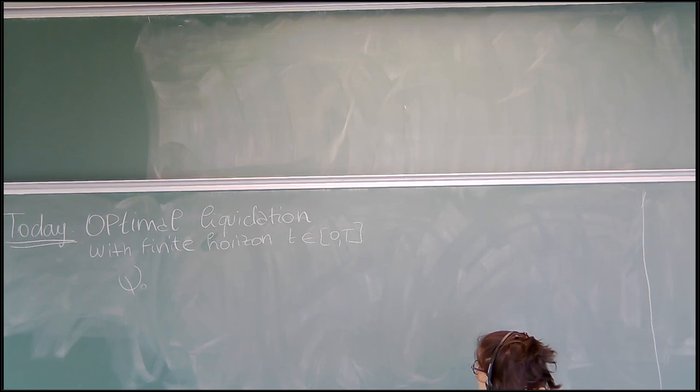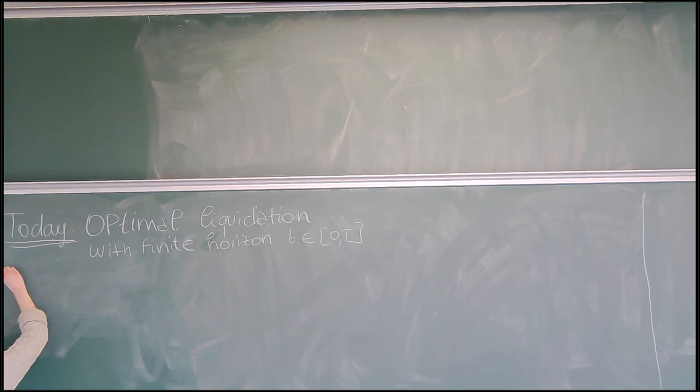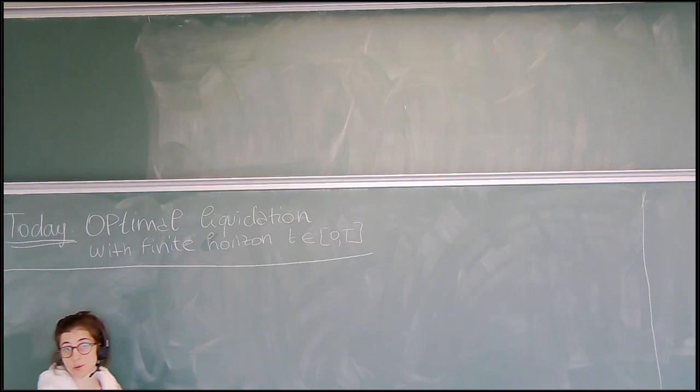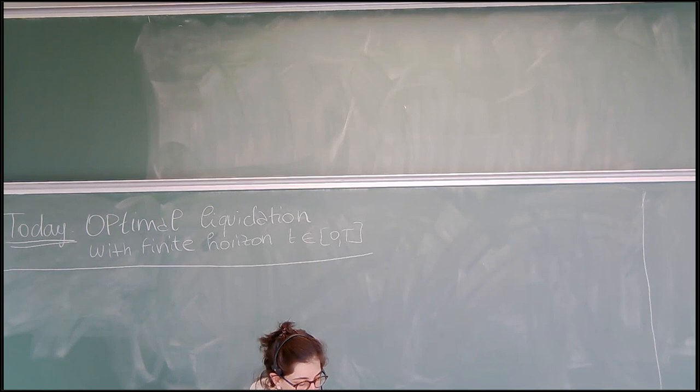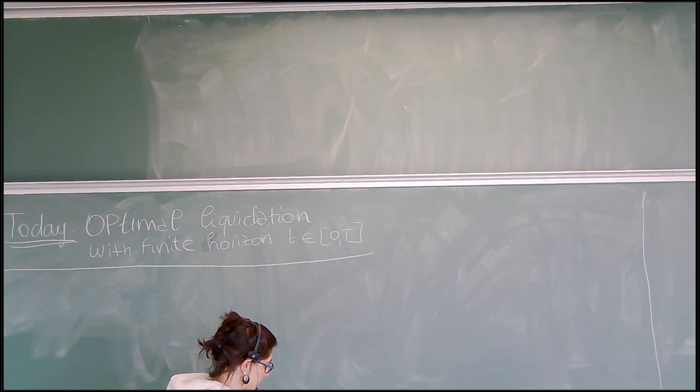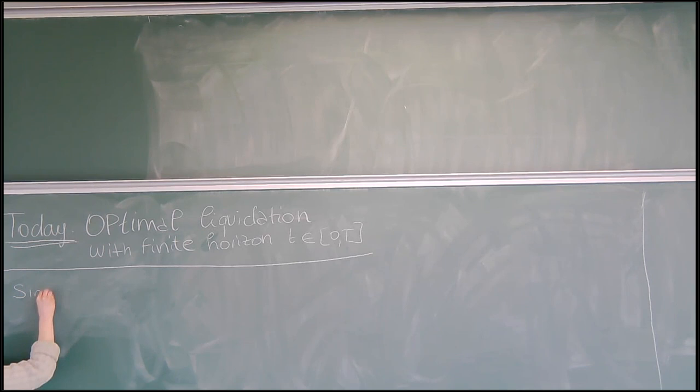Let's start with part one. Let me summarize the quantities. I will tell you that the way we treat this problem with interaction falls within the framework of so-called mean field games. There are references in the text that you may look at if you're interested. But first, let's start with a single agent.